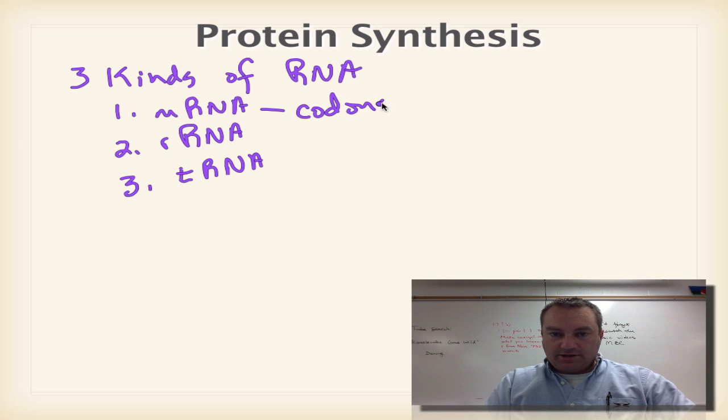We want to remember some key stuff in here. RNA has got codons, tRNA has got anticodons, and we want to remember that one codon is going to equal one amino acid.